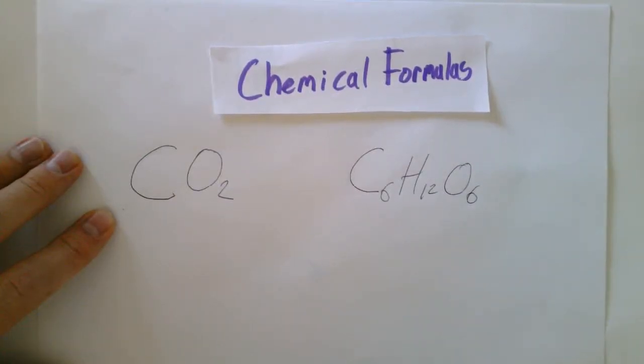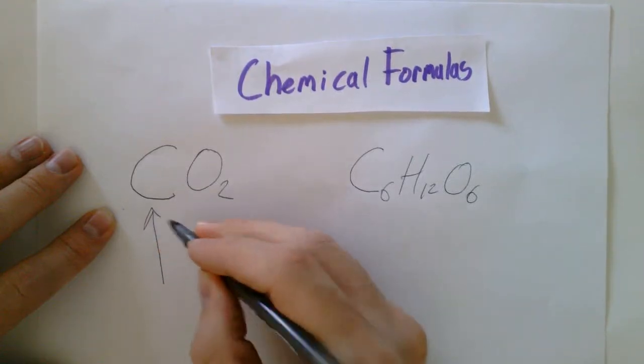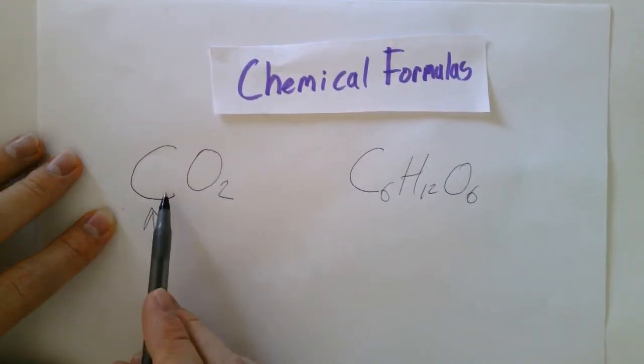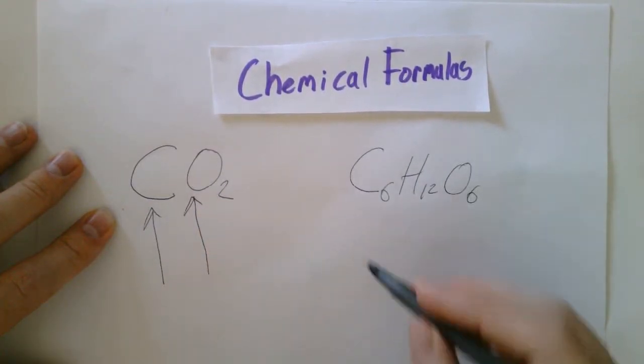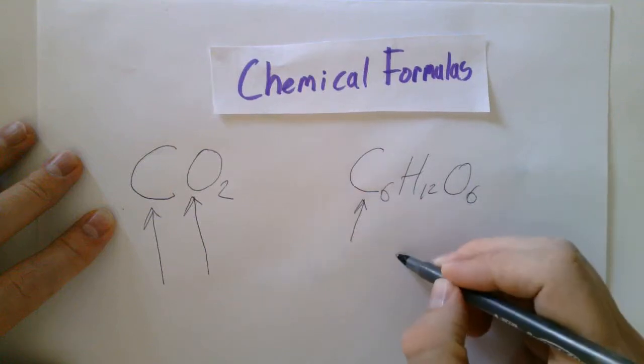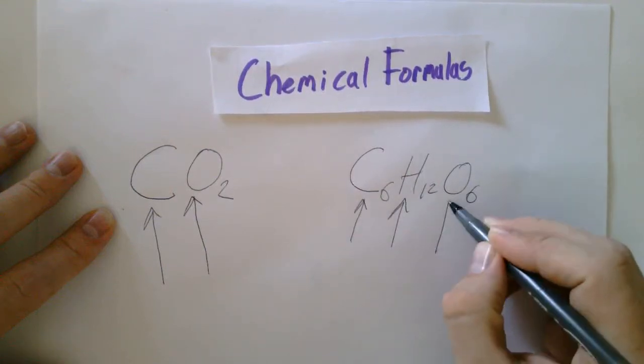So in these chemical formulas, we're being given a couple of things. Here the C is the symbol for carbon, and so you're given the symbol for carbon and the symbol for oxygen. Over here we've got the symbol for carbon, symbol for hydrogen, and the symbol for oxygen.